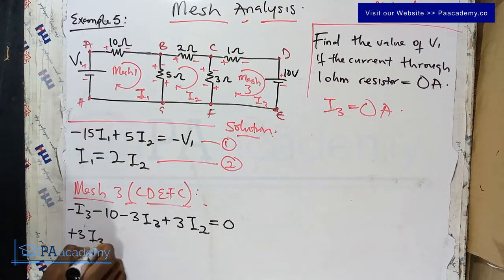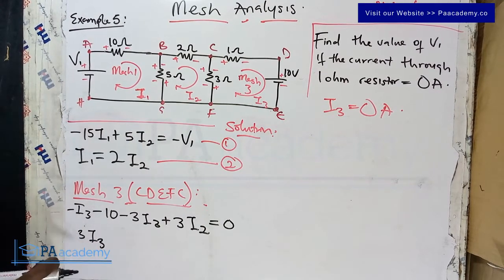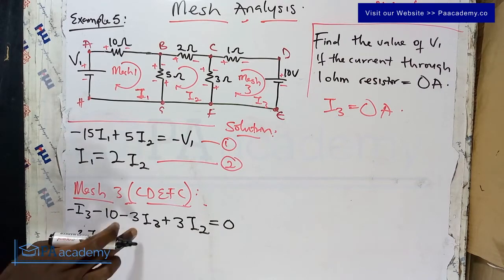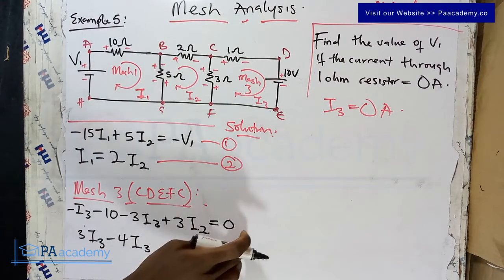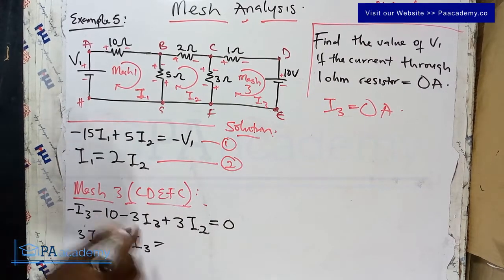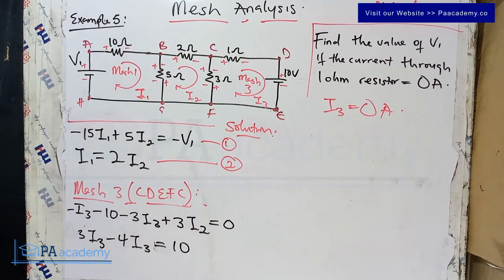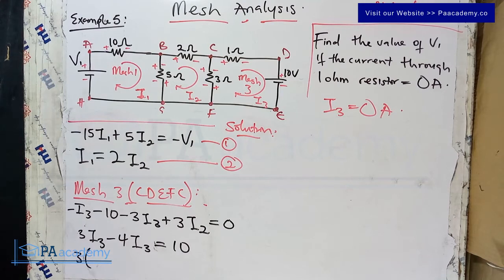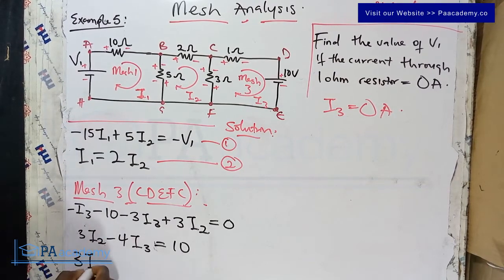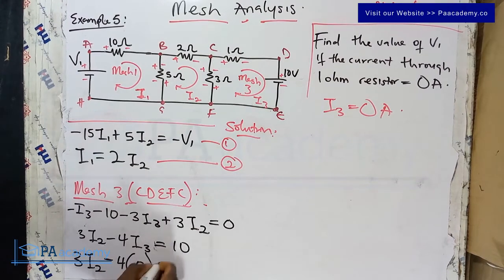Substituting I3 = 0: 3·I2 − 4·(0) = 10, which gives 3·I2 = 10. This is Equation 3.